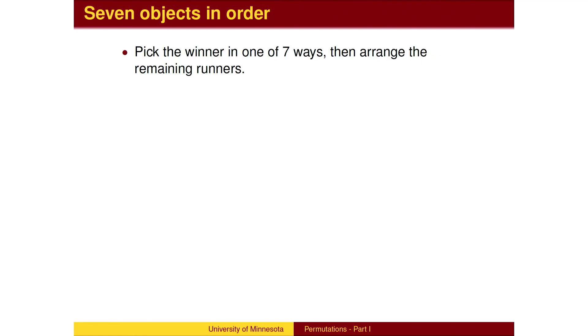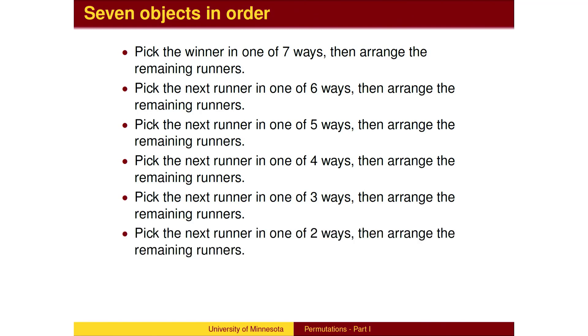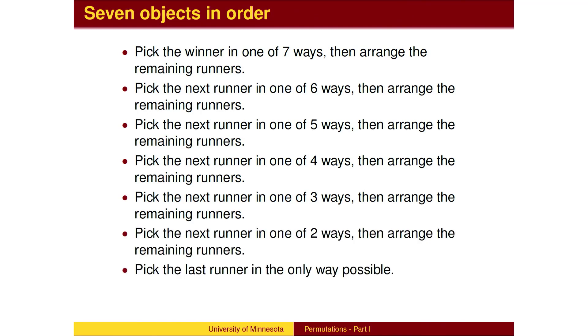We can repeat this process for any number of runners. To place seven runners in order, we first pick the winner in one of seven ways and repeat the process. We next pick the second place runner in one of six ways. Each successive selection has one fewer choice until we have arranged all the runners.